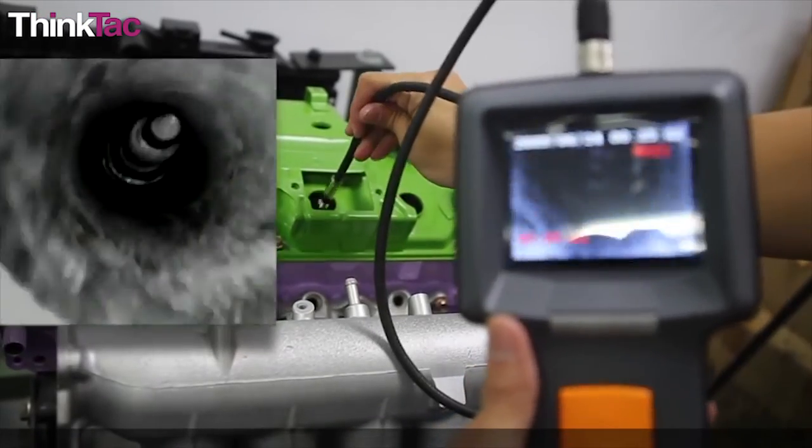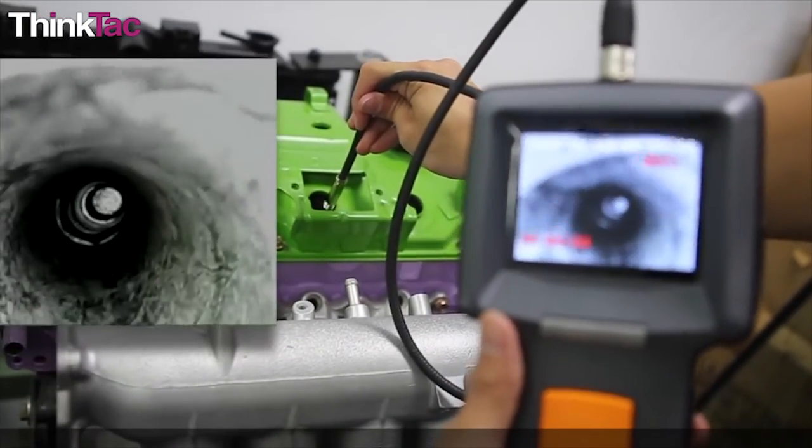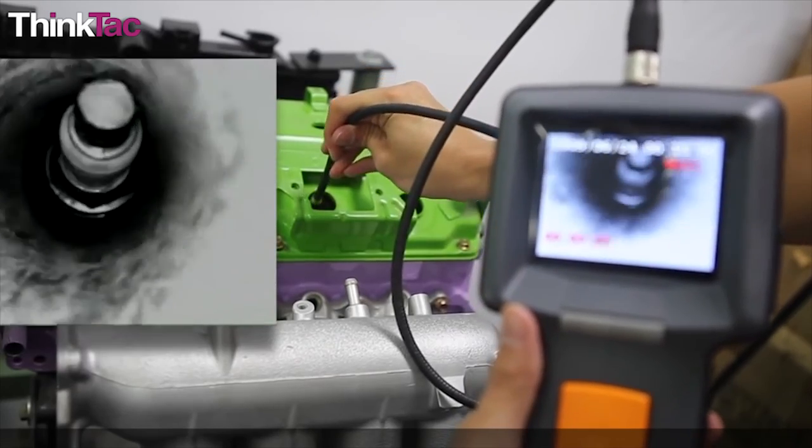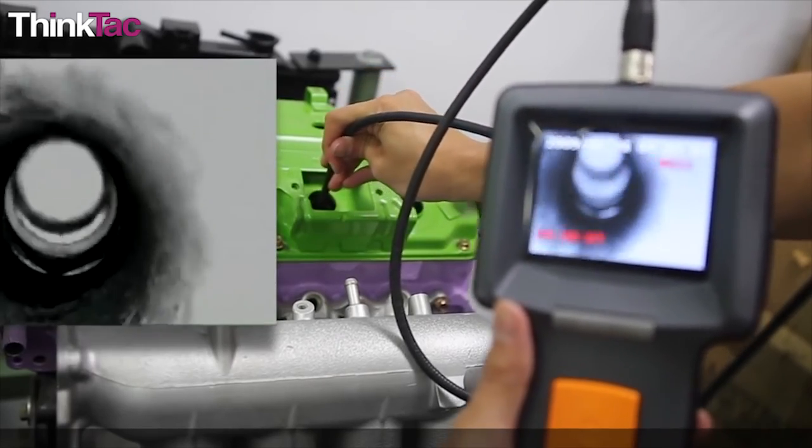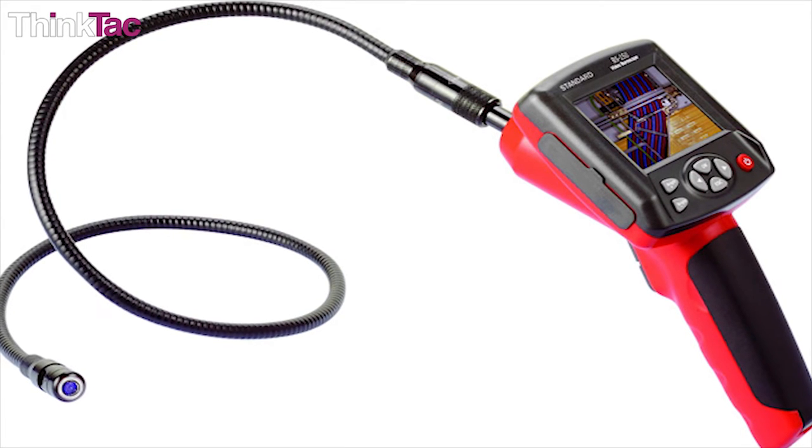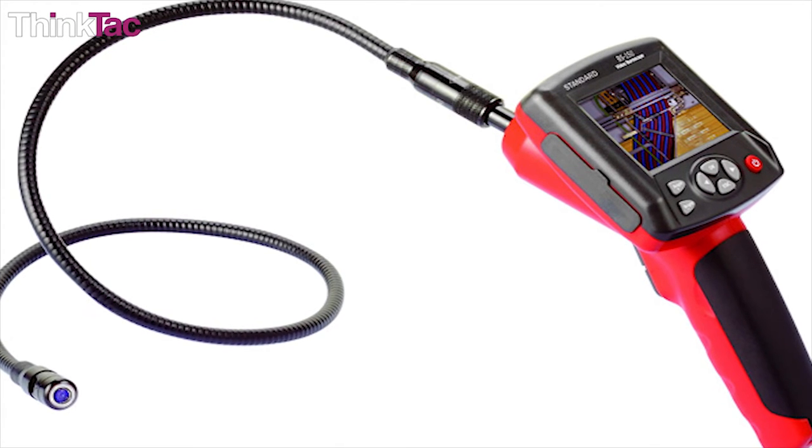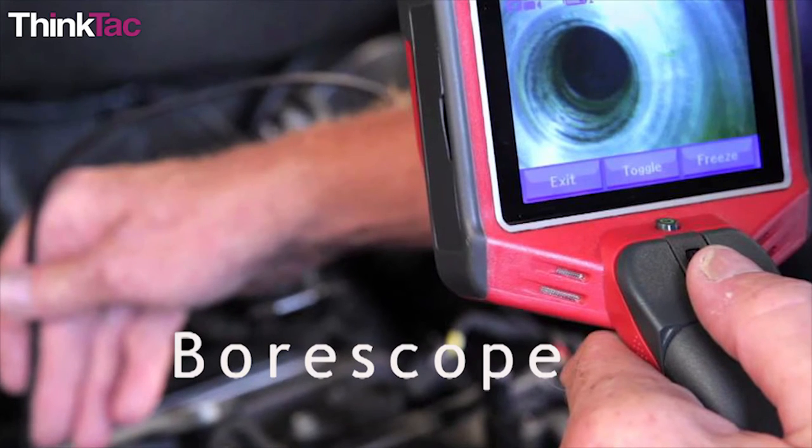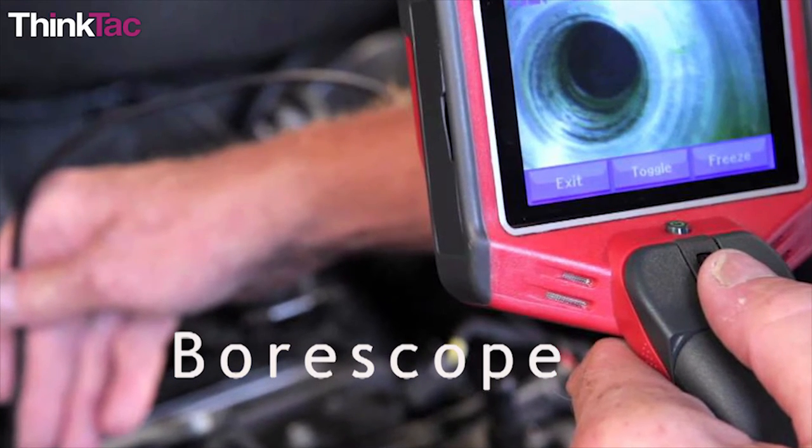Endoscopes are also used like tiny telescopes to look inside complicated machines or buildings into locations which would otherwise not be possible to see. One can use endoscopes to identify faults inside these big instruments. Industrial endoscopes are known as borescopes or fiberscopes.